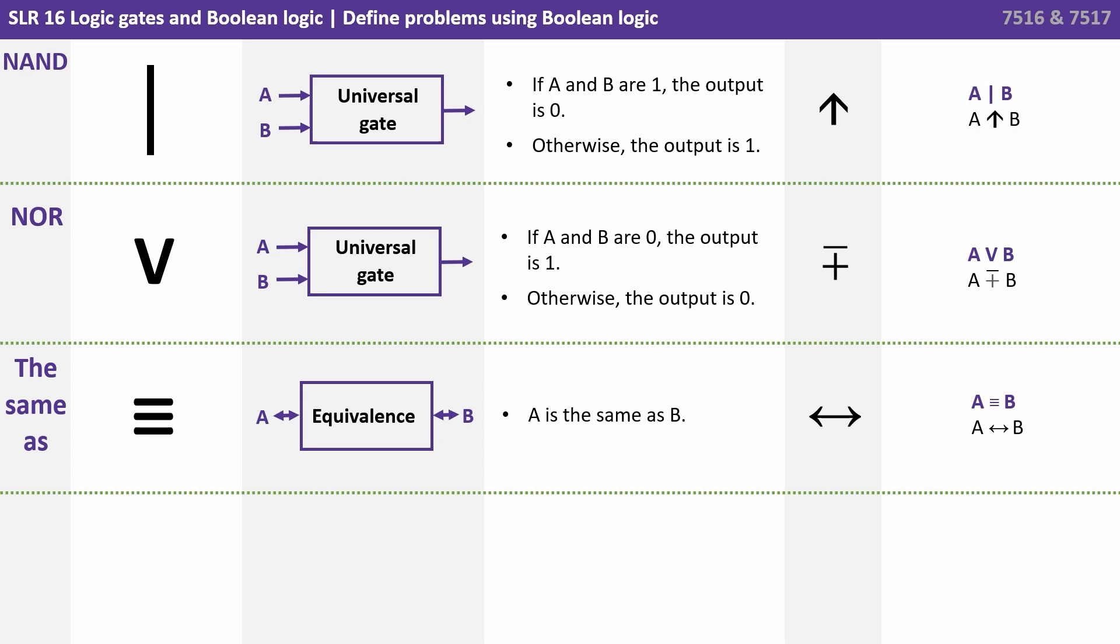You'll also see in Boolean expressions three horizontal lines close together. This means equivalence or the same as. So when you see this symbol, you could be writing something as A is equivalent or the same as B, and we use these three lines.